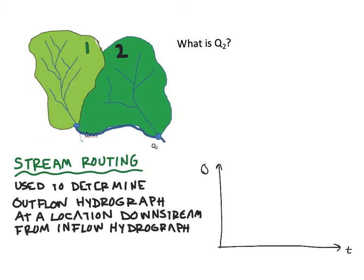If we use the unit hydrograph to figure out Q out, maybe this is Q out coming out from that first subwatershed, we want to know what happens to that flow when it gets to Q2. In general, it's going to end up looking something like this because of the way that the channel changes. But we would like some way to quantify that. So we are going to use stream routing.